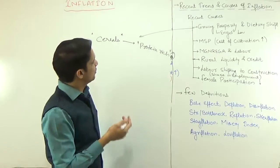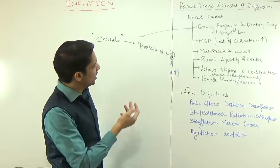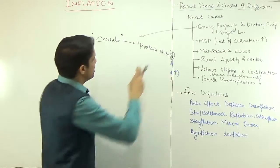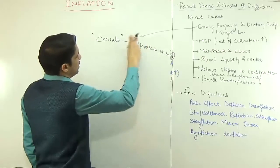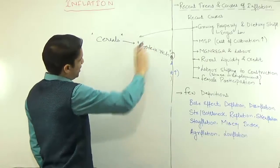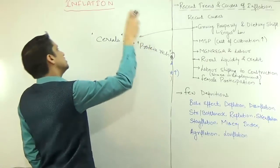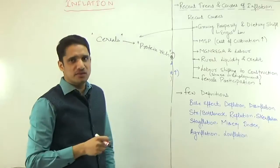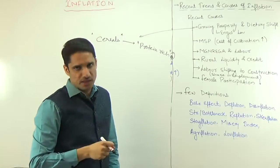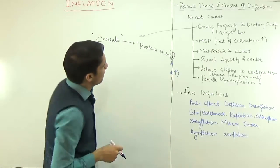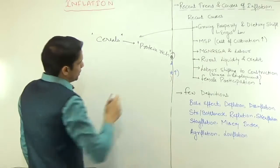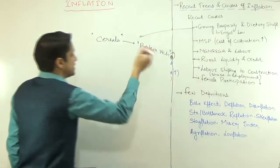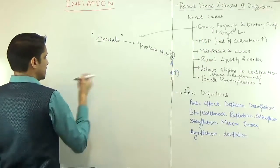Because of this dietary shift, the prices of protein-rich items like pulses, eggs, and milk have increased drastically. This is the major cause of high food inflation in India, and high food inflation is a major cause of increase in the value of CPI. Related to this, we have a law known as Engel's Law.